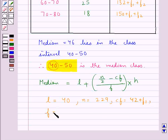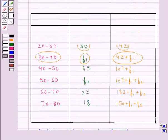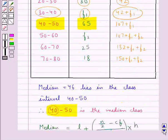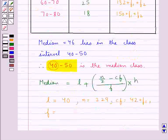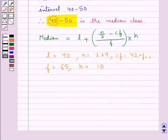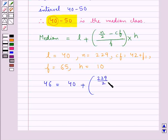F is the frequency of the median class. The median class is 40 to 50 and its frequency is 65, so F equals 65. H is the class size, which equals 10. Now we substitute the values: 46 equals 40 plus (229 upon 2 minus (42 plus F1)) divided by 65, multiplied by 10.